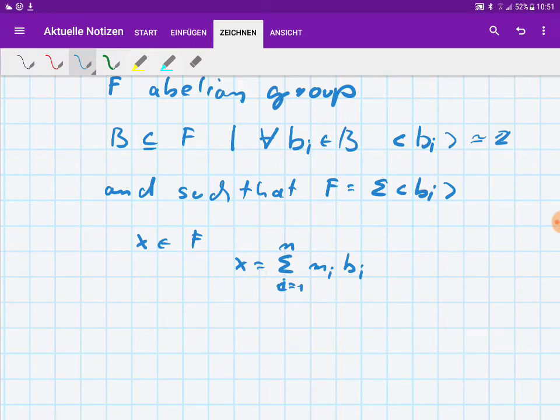So this is the definition of a free abelian group and this set B is called the basis.